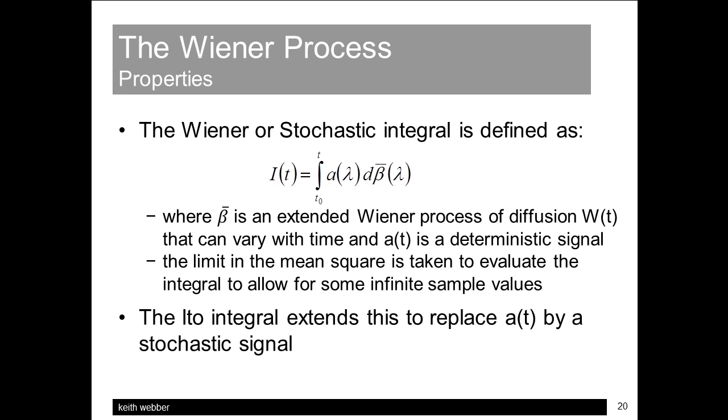While normal Riemann-type integration of white noise is not allowed, it is possible to perform a stochastic or Wiener integration. And this involves taking the limit to converge in the mean square sense, allowing some values, like inconvenient infinities up or down, to go astray, providing the bulk of the sample values converge to a finite result. A mean square approach can also be taken to differentiating stochastic signals, but we won't pursue these mathematical issues further here, where we can assume band-limited white noise for all practical situations.